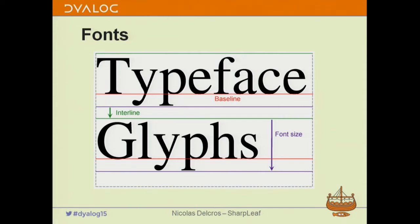Another thing is the interline — the space between the lines. So here you have two lines and it can be fixed or relative to the font size. The baseline is the red line you can see. You don't really need it if you do automated flow — you only need the font size and the interline, and it computes it for you. The baseline is used for free text or when you're not flowing, such as on charts — the Y coordinate will always be that of the baseline.